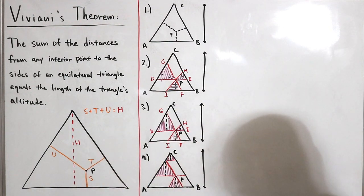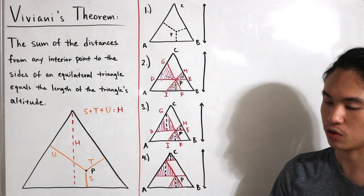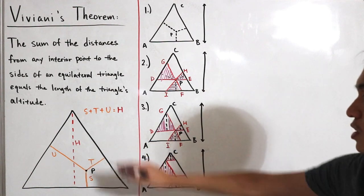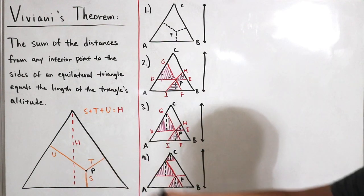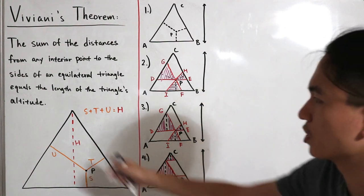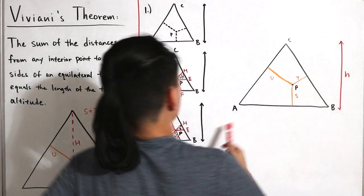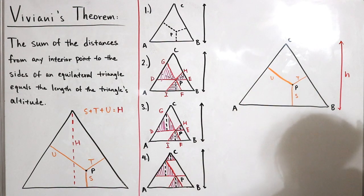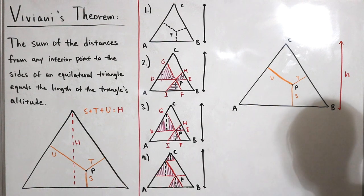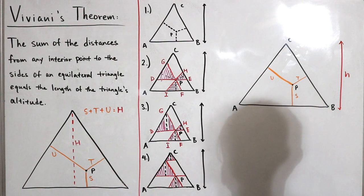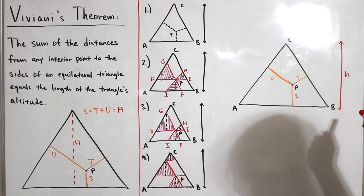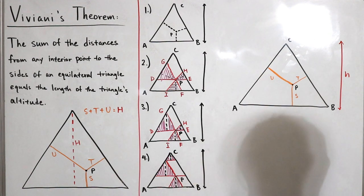Now let's prove this with words. This algebraic proof depends on the proposition that the area of a triangle equals one-half times base times height. I'll draw the same equilateral triangle again, denote the parameters, and include the vertices. I also draw the altitude line segment h for use in the next steps.